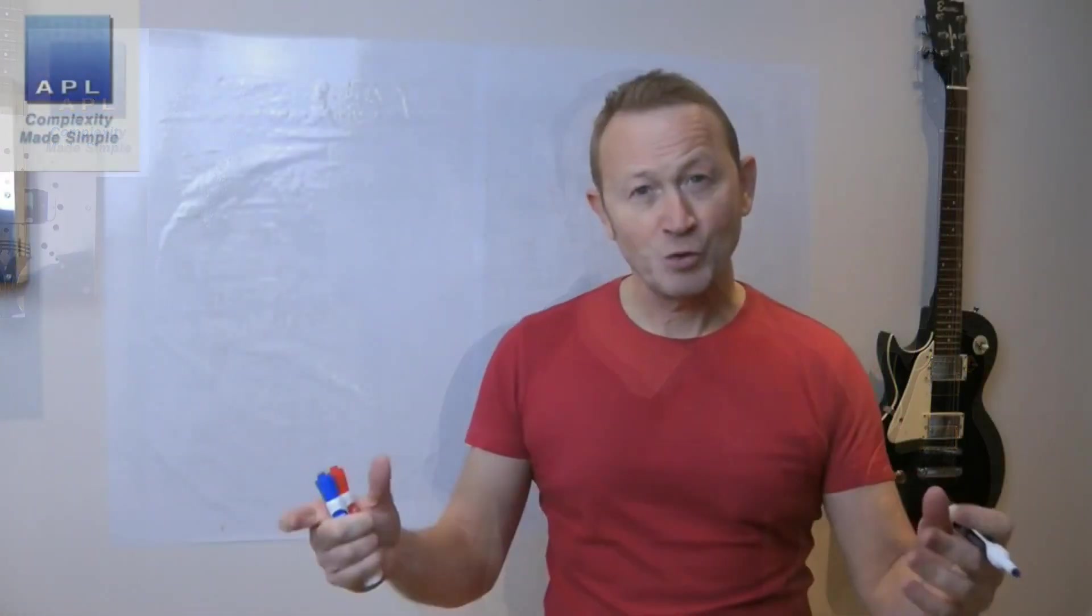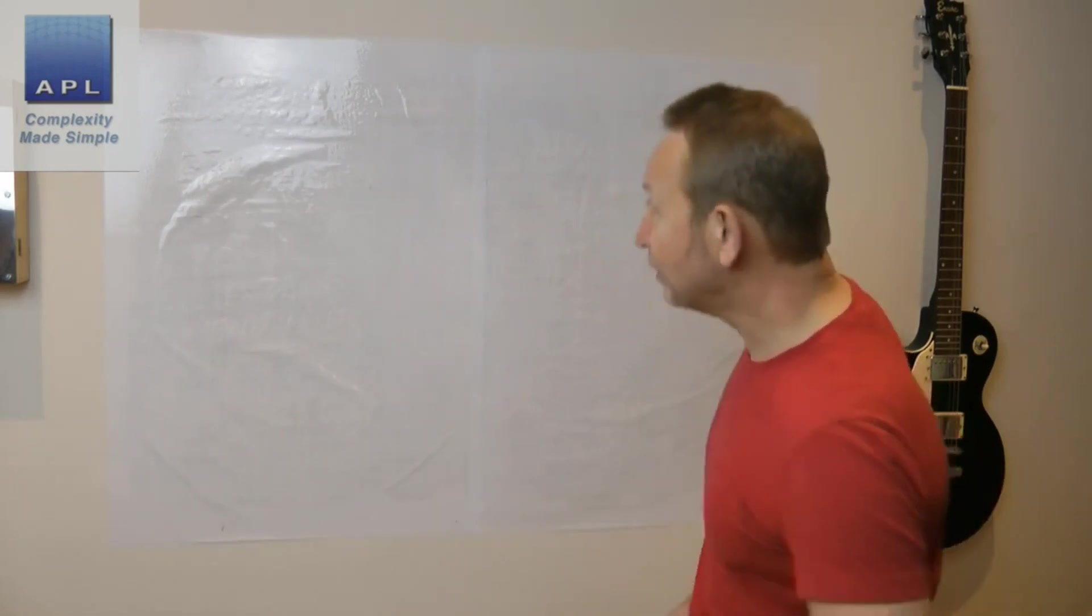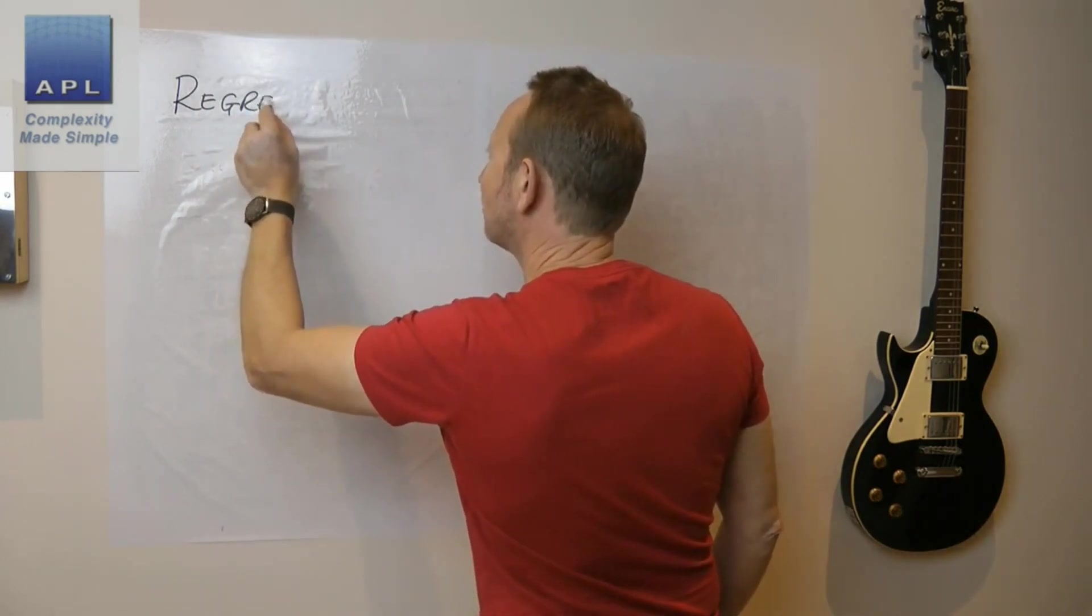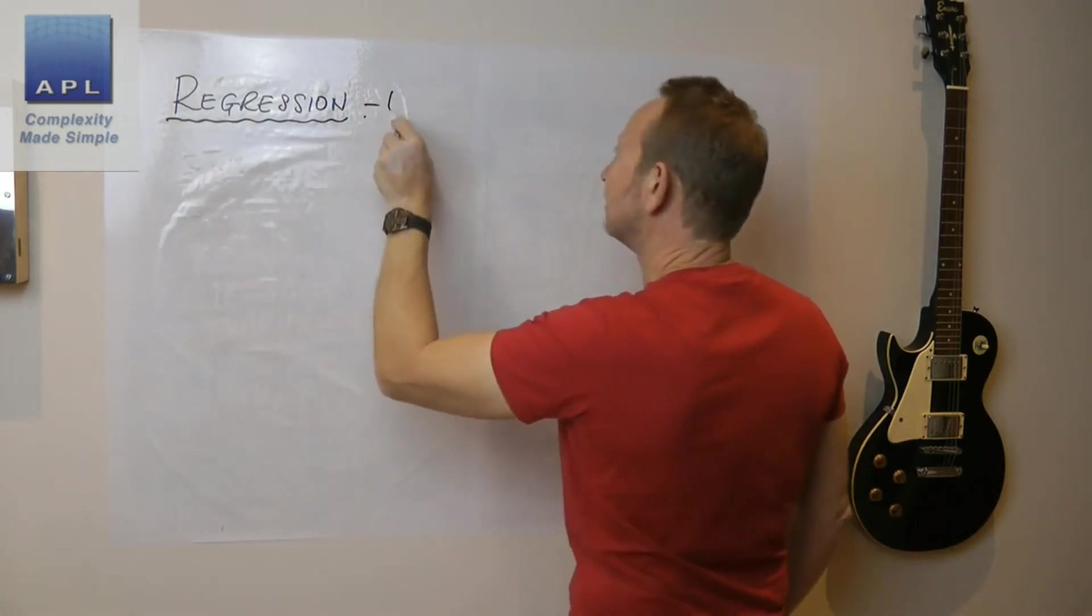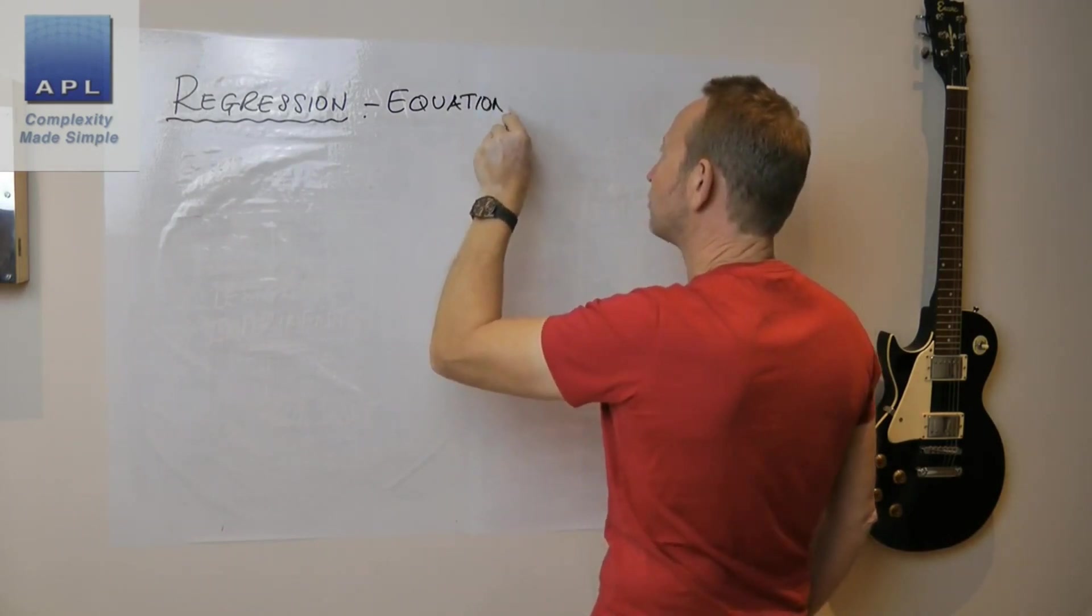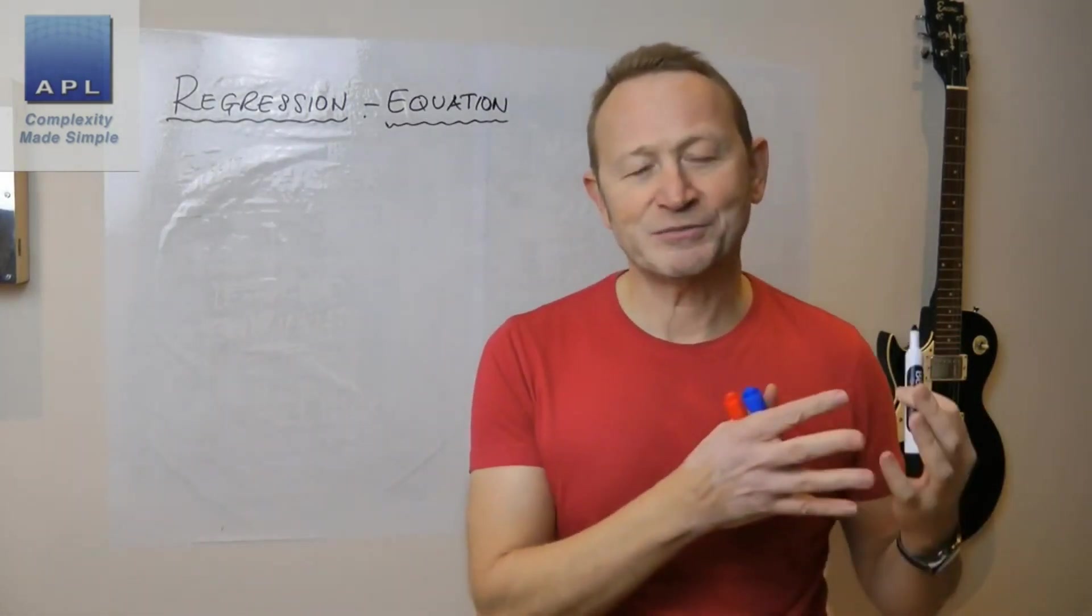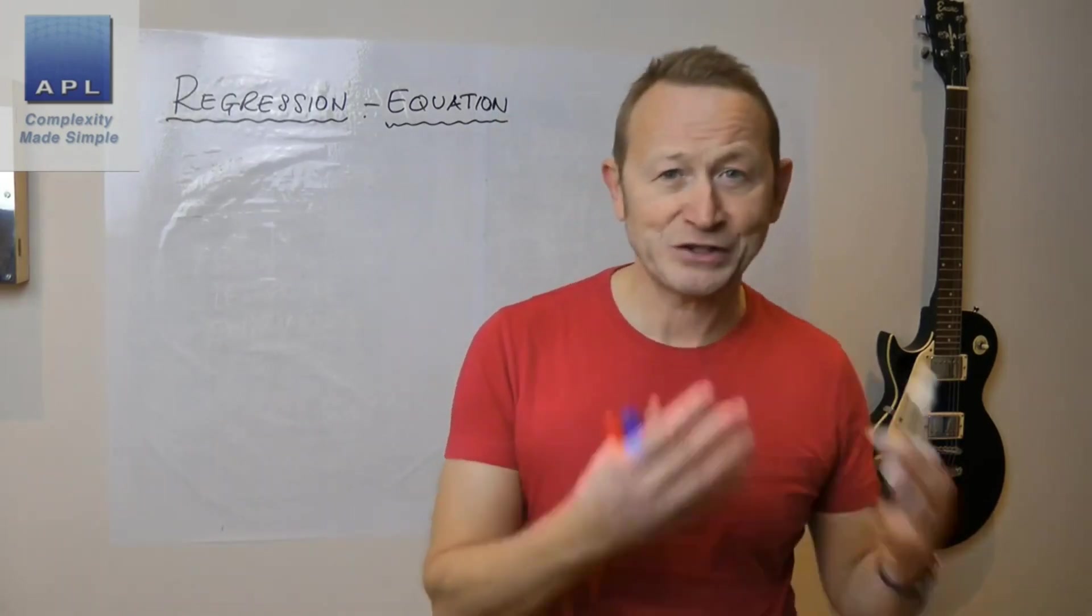They are all available from lulu.com and the links are in the video below. Welcome to Complexity Made Simple, my name is Paul Allen. The subject of today's video newsletter is we're going to take a look at regression, simple regression. What does it do? Well, it generates an equation.